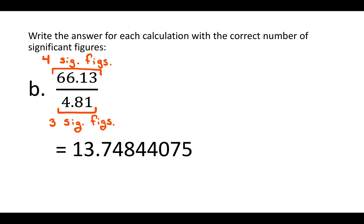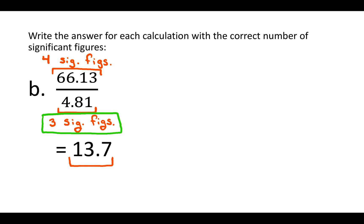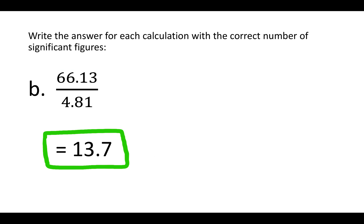Start counting from the left, go to the right — that gives you the 1, the 3, and the 7. Everything else needs to be rounded away. Go to the digit just to the right of that: because it's below 5, we're going to round that 4 down, and that leaves us with 13.7 as our answer.